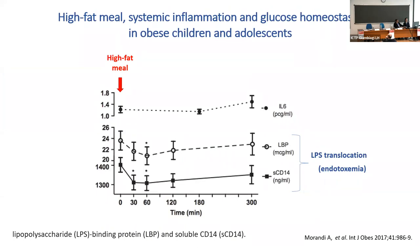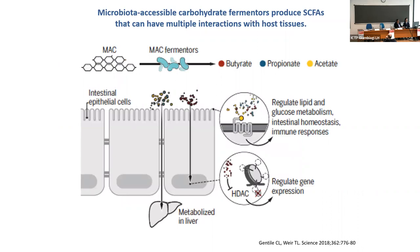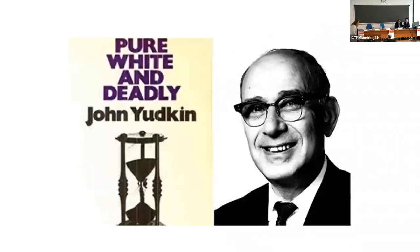In our study measuring the effect of a high-fat meal on systemic inflammation and glucose homeostasis in children and adolescents, we found that consuming a high-fat meal increases endotoxemia — a condition that promotes the metabolic disturbances associated with obesity. Using dietary fiber, however, allows fermentation in the gut to produce short-chain fatty acids. These short-chain fatty acids act as regulatory molecules for lipid and glucose metabolism, intestinal homeostasis, immune response, and gene expression regulation.